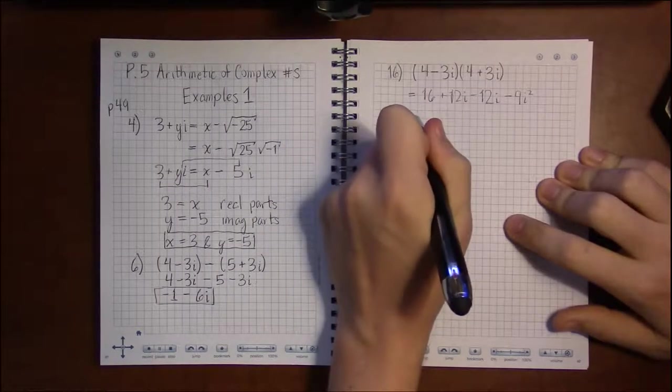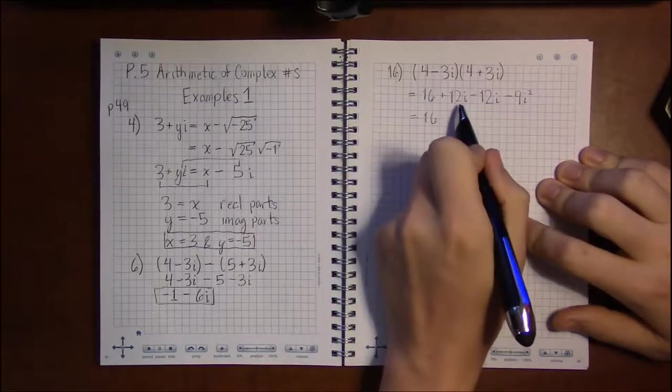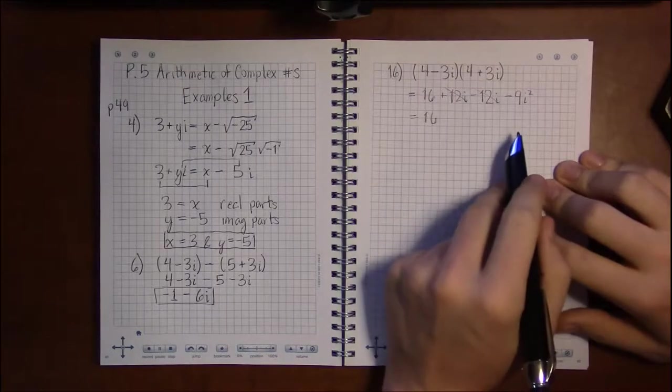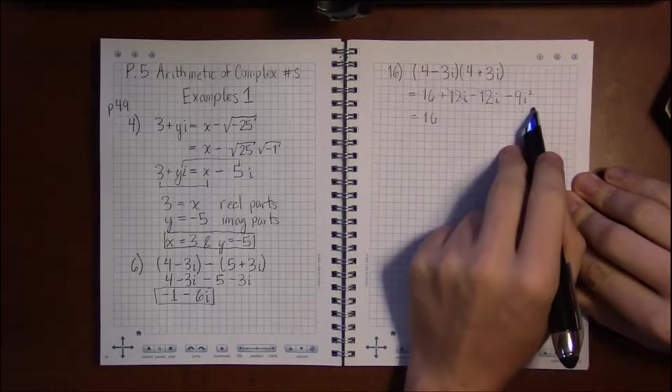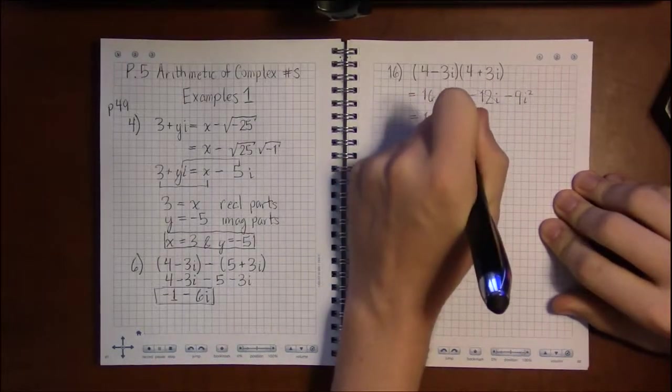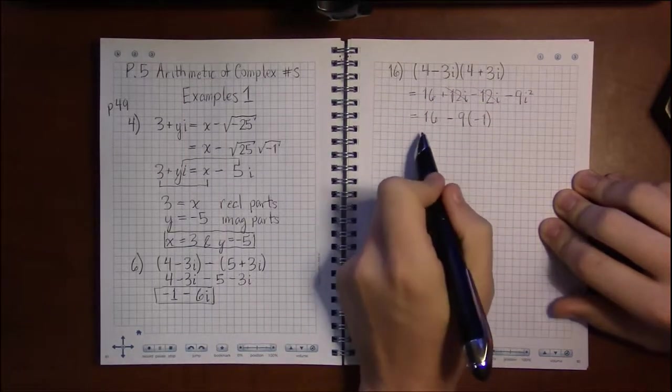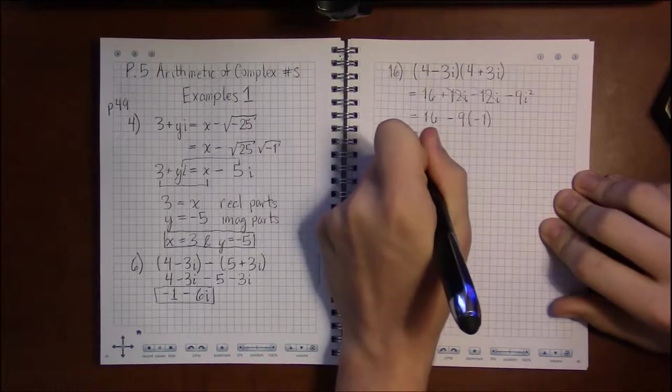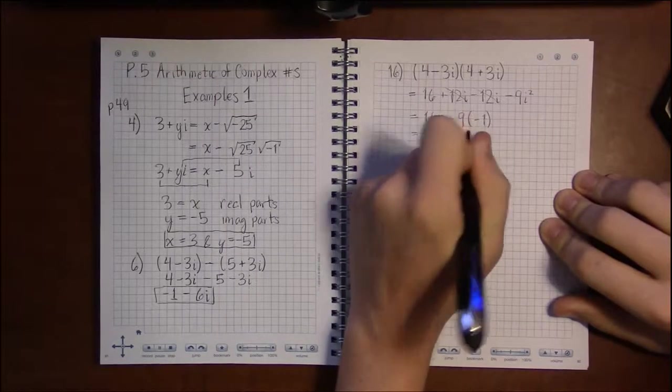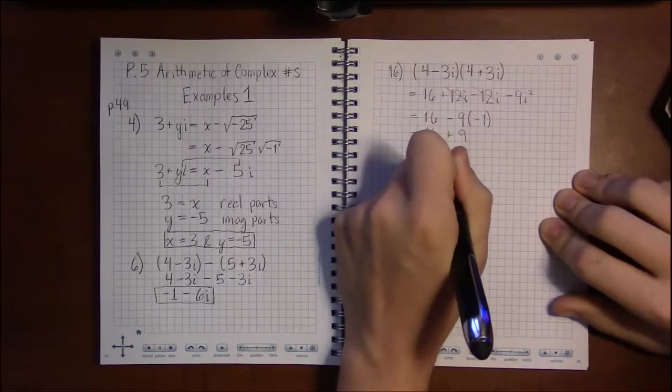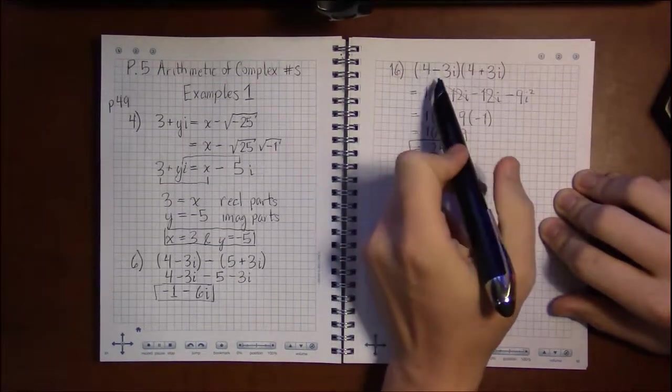i squared, well let's see—16 plus 12i minus 12i, these things cancel each other out, then minus 9 i squared. i squared is something special because i is square root of minus 1, then i squared is minus 1. So this is 16 minus 9 times minus 1 is a plus 9, and so our answer is 25, a number that has no i's in it.